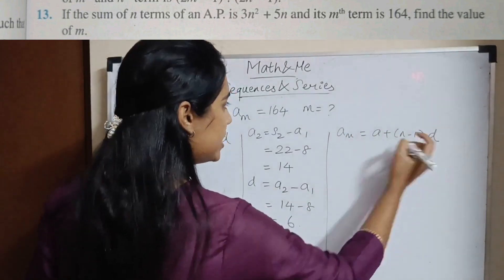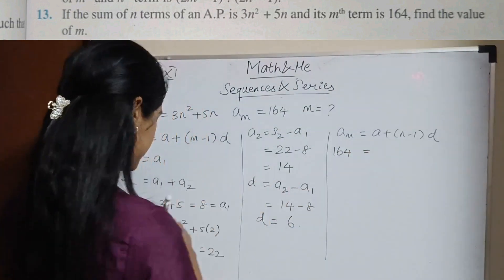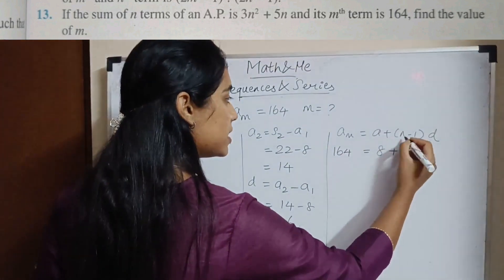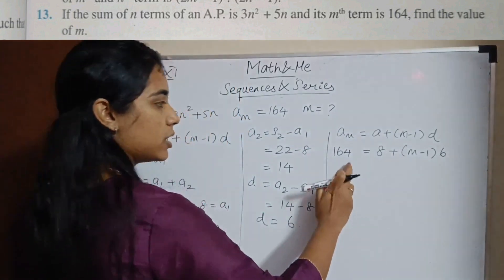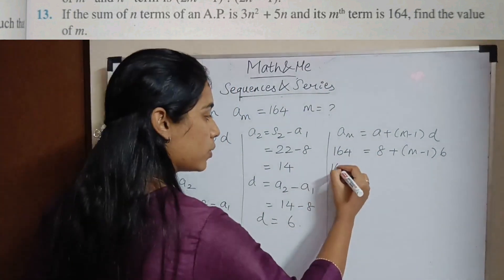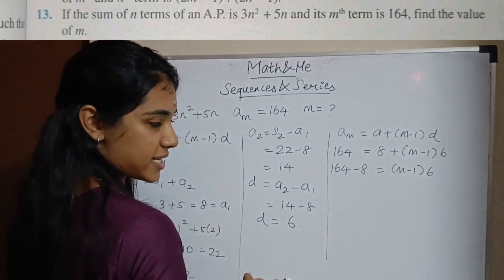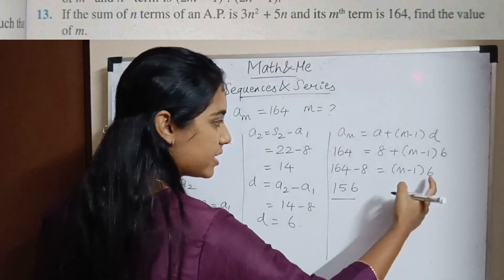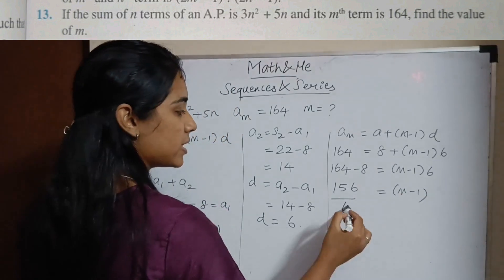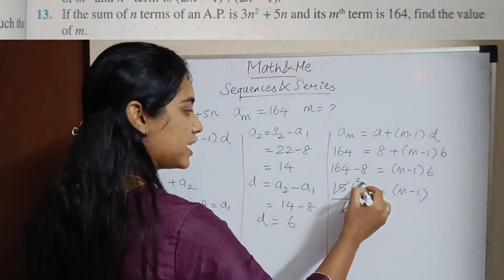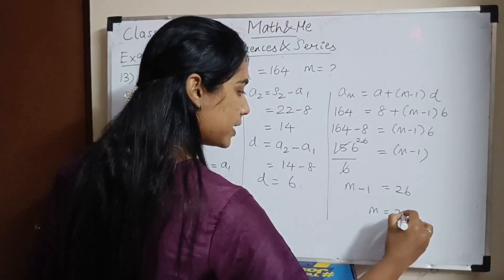Now I have a = 8 and d = 6. Using am = a + (m − 1) × d: 164 = 8 + (m − 1) × 6. So 164 − 8 = (m − 1) × 6, giving 156 ÷ 6 = m − 1, so m − 1 = 26, therefore m = 27.